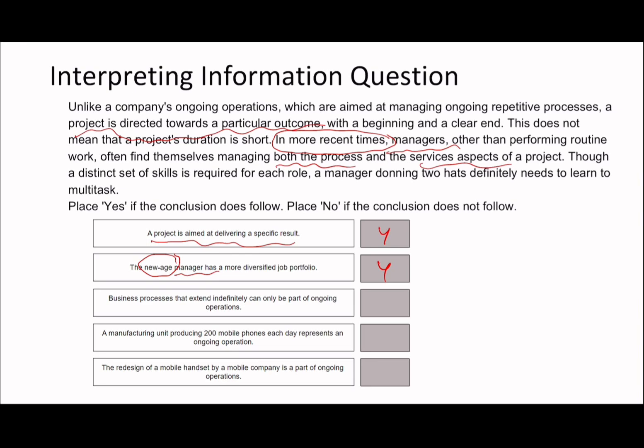Third statement: 'Business processes that extend indefinitely can only be part of ongoing operations.' We remember reading about ongoing operations at the top. It says: 'Unlike a company's ongoing operations, which are aimed at managing ongoing repetitive processes, a project is directed towards a particular outcome with a beginning and an end.' So a project has a beginning and an end. Ongoing operations are just ongoing repetitive processes. Something that extends indefinitely doesn't have an end — so it's not going to be a project — therefore it must be an ongoing operation.